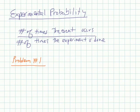Experimental probability. So experimental probability is the number of times the event occurs in the number of times that the experiment is done. Experimental means you're experimenting to figure out what the probability of something is. So let's say that I have a dice and I roll it 5 times.